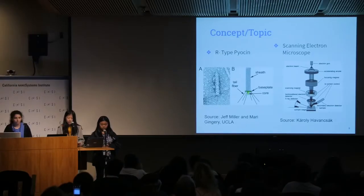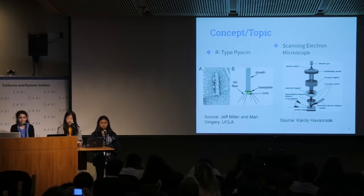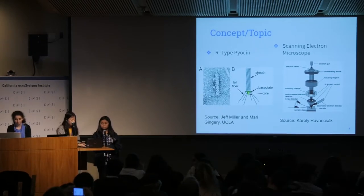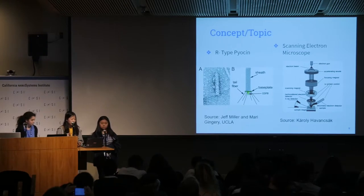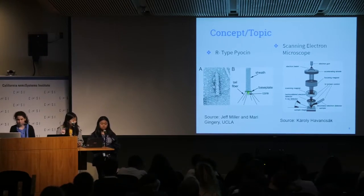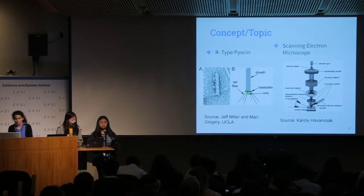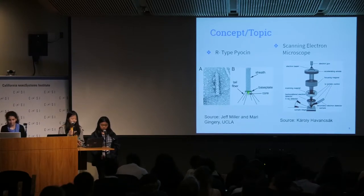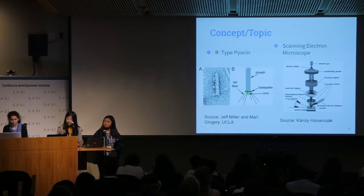There are two topics we'll be mentioning today: first is the R-type Pyocin, and next will be the scanning electron microscope. If you see in the picture, part A is a scanning electron microscopy image of the R-type Pyocin, which is negatively stained with phosphotungstic acid, and part B is a diagram showing the major structures and parts of it. The scanning electron microscope image is a diagram showing the parts labeled.